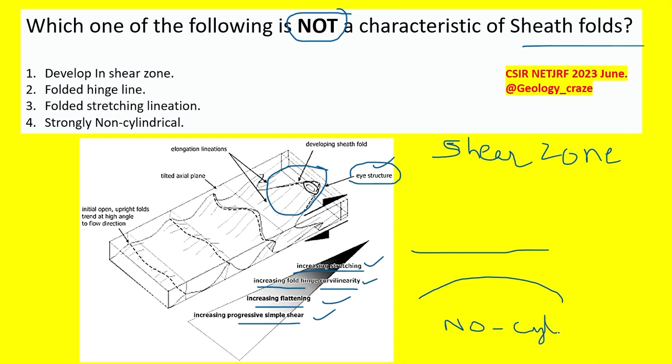The hinge line is curved. As we have seen, with progressive deformation the hinge line also converts into curvilinearity. The lineation that we are getting over this structure is in the direction of the dip.